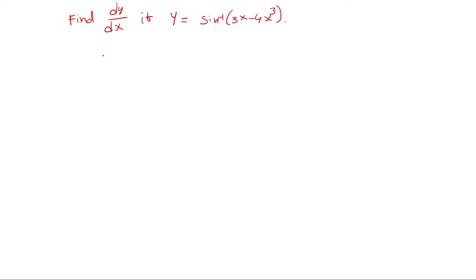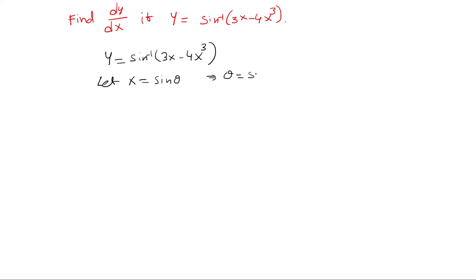First, we find y equal to sin inverse of 3x minus 4x cube. Let x equal to sin theta, then theta equal to sin inverse x. We can find y is equal to sin inverse of the expression 3 sin theta minus 4 sin cube theta.